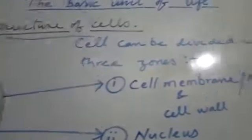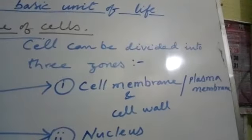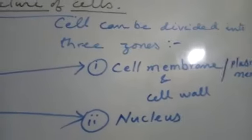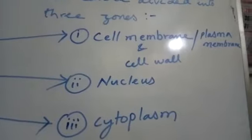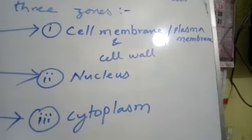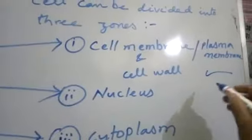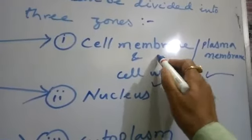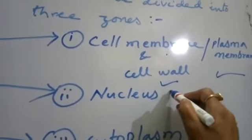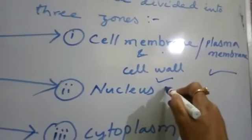This cell can be divided into three zones for study. The first zone is the cell membrane, also called the plasma membrane. The second is the cell wall. Cell membrane is present in all cells, while the cell wall is found only in plant cells. In plant cells, there is an additional layer which is called the cell wall. These two form the outermost zone of the cell.